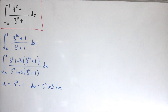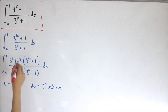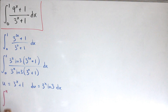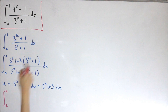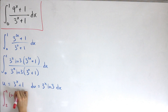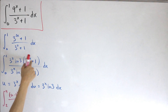Don't forget to change your bounds — we're now dealing with a new variable. For the new bounds: plugging in x equals one gives u equals four (the upper bound), and plugging in x equals zero gives u equals two (the lower bound). Now notice that three to the two x plus one can be rewritten in terms of u as u minus one, quantity squared, and then plus one — that still retains the same value as three to the power two x plus one.